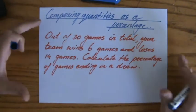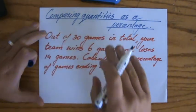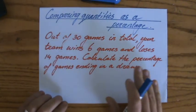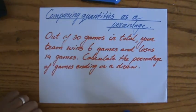Good, I promise you one more example question where we compare quantities as a percentage to each other. And let's have a look at this question. Out of 30 games in total, your team wins 6 games and loses 14 games. Calculate the percentage of games ending in a draw.